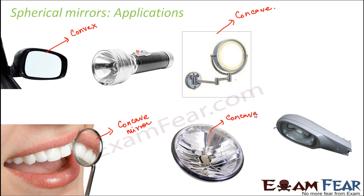Think of the street light. What kind of mirror is there in a street light? There you have a convex mirror. Do you know why? Because a convex mirror is a diverging mirror — it diverges and spreads light, and that is exactly what is needed from street lights. So these are the various applications of different types of spherical mirrors based upon what kind of images they form.